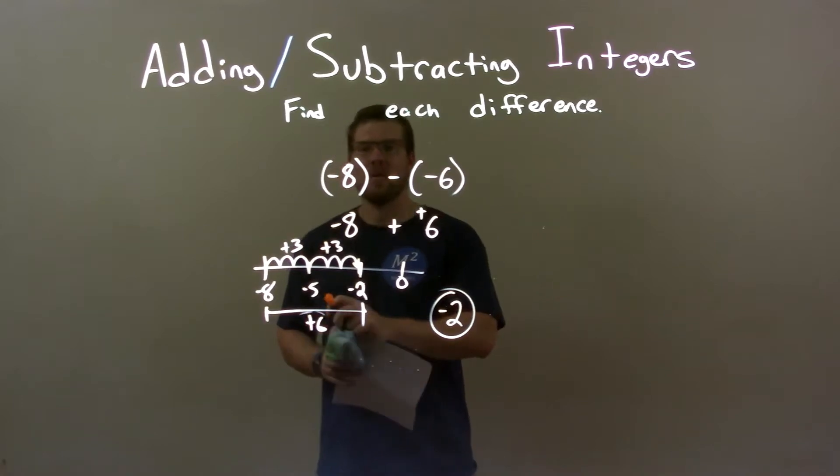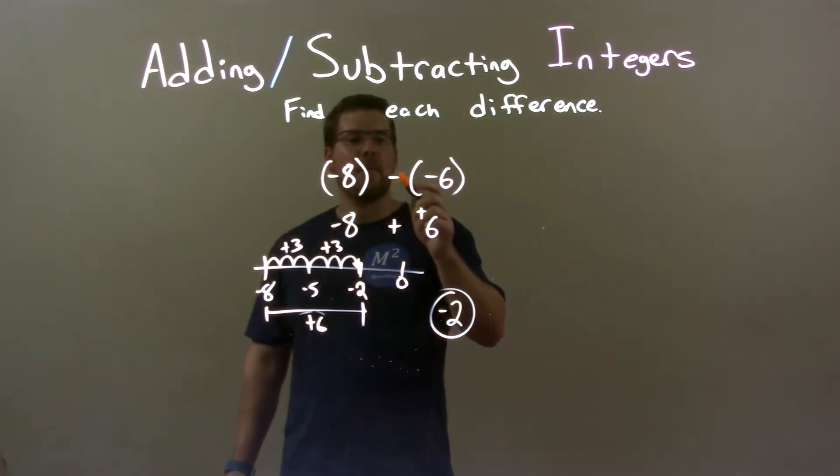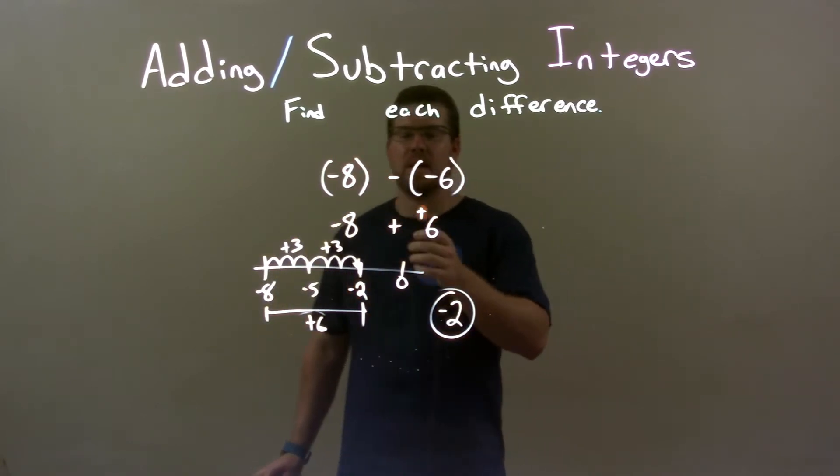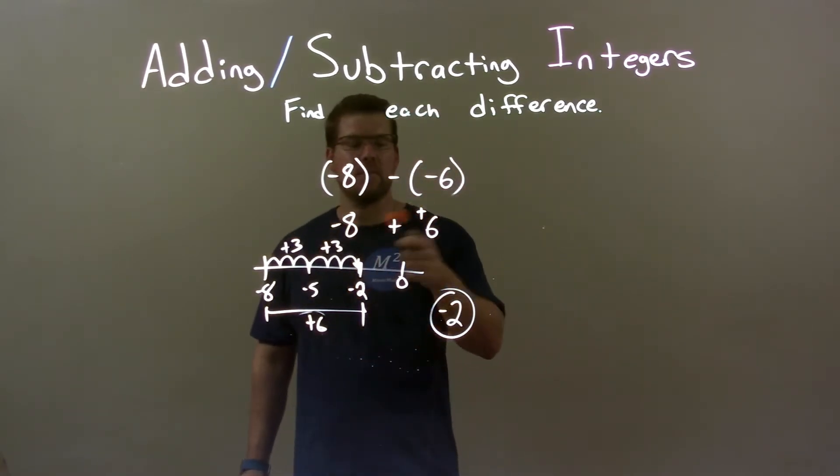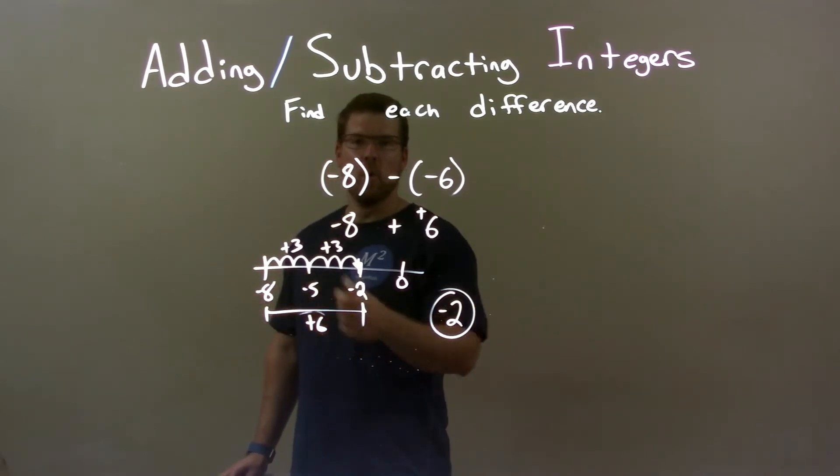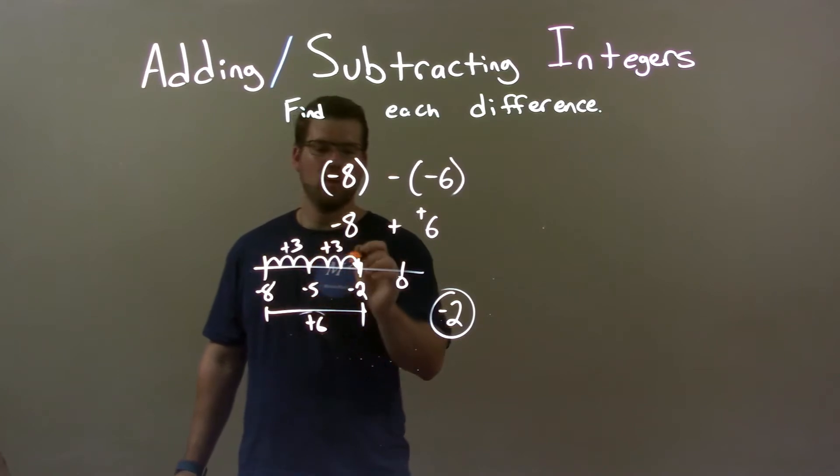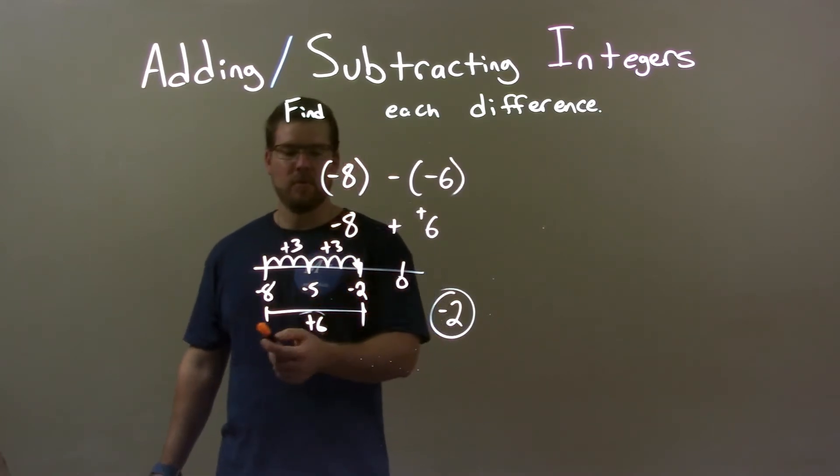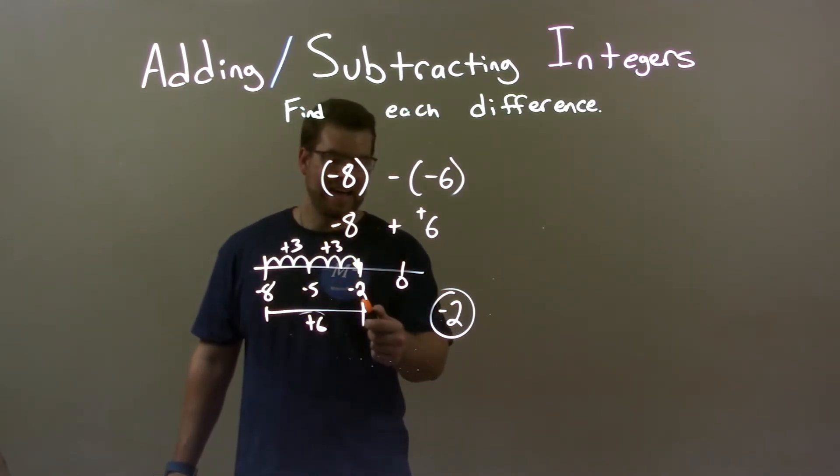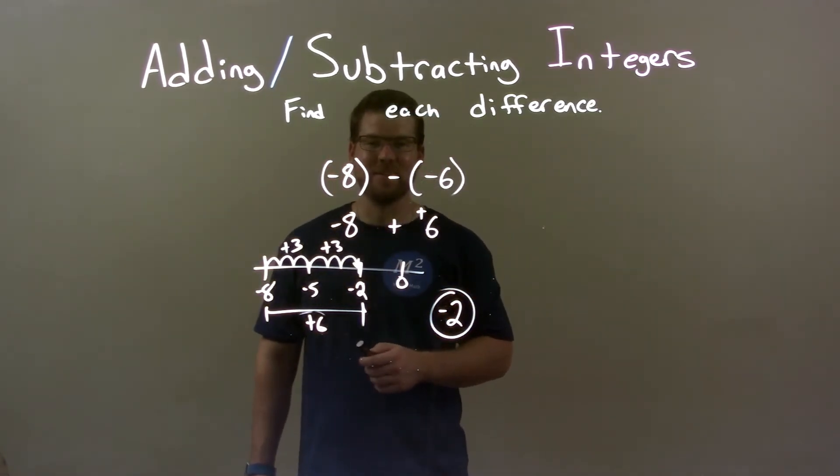So quick recap, we have a negative 8 minus a negative 6. Minus a negative 6 is the same thing as adding a positive 6. So we have negative 8 plus a positive 6. I start at negative 8, and then have to move that over 6 units. So 3 units gave me a negative 5, 3 more units got me to negative 2. I moved a total of 6 units, which let me end at a negative 2. And so our final answer is negative 2.